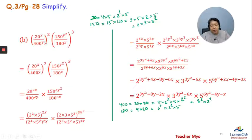Starting with 20 to the power 2x, 400 power 2y, 150 power 3y squared, 180 power 3x. This becomes 2 power 4x times 5 power 2x, times 2 power 8y times 5 power 4y, times 2 power 3y squared times 3 power 3y squared times 5 power 6y squared, times 2 power 6x times 3 power 6x times 5 power 3x.